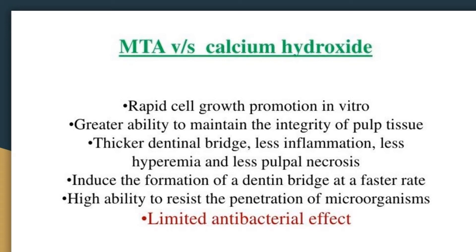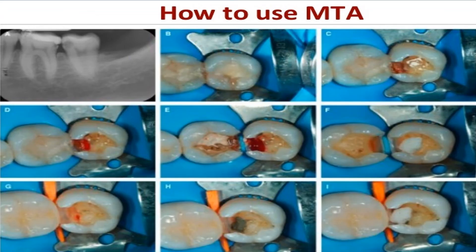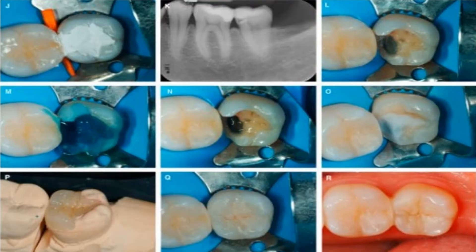A complete treatment sequence of MTA direct pulp capping is illustrated in an asymptomatic tooth #37 in a 36-year-old woman. Steps include: (a) preoperative radiograph showing deep caries, (b) preoperative image, (c) deep caries, (d) pulpal exposure, (e) copious bleeding, and (f) placement of a 5% sodium hypochlorite pellet to stop bleeding, (g) end of bleeding, and (h) placement of gray MTA at a thickness of 2 mm.